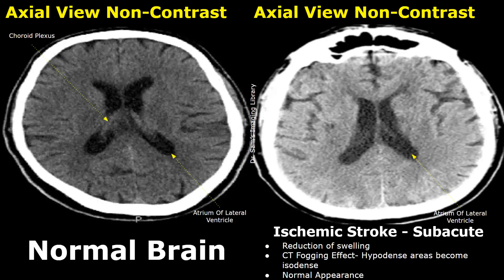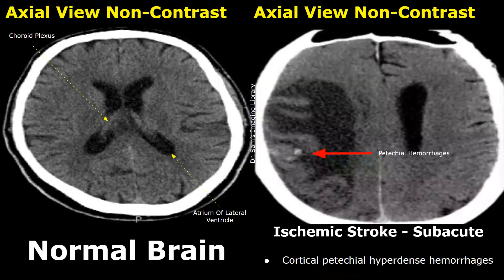In some cases of subacute ischemic stroke, petechial hemorrhages may be seen. These rounded, hyperdense small hemorrhages may be seen at the site of infarction.